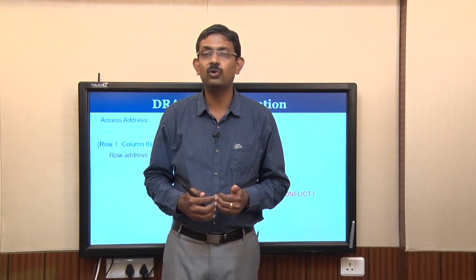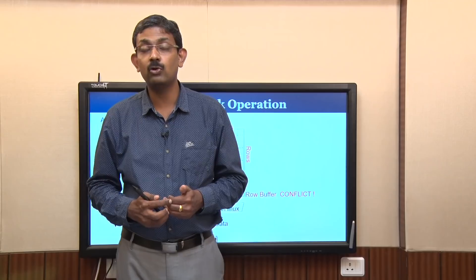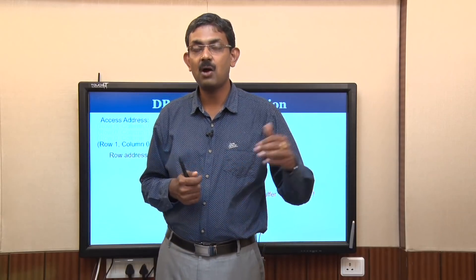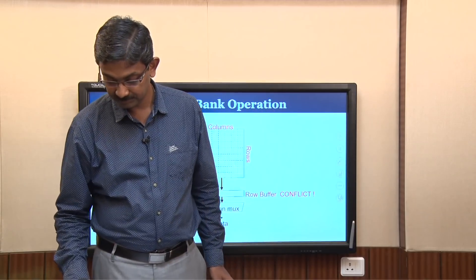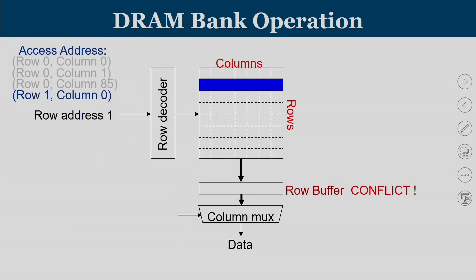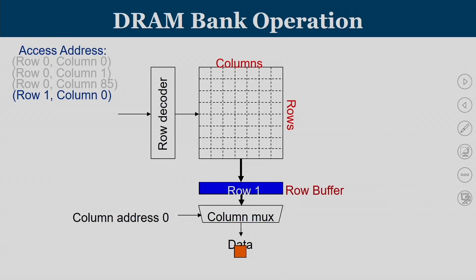Before the row buffer is loaded with a new row, the existing values must be stored back. Then an activate command is given for row address 1, row 1 contents come into the row buffer, and column address 0 is applied to get the transferred data.